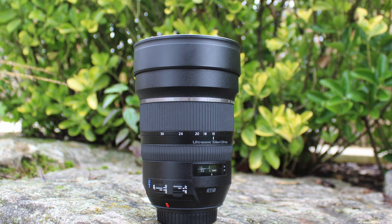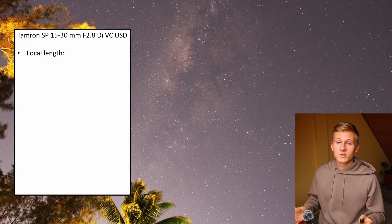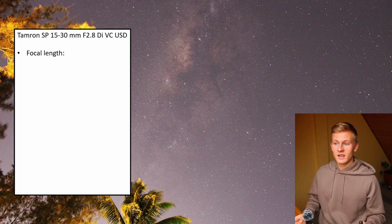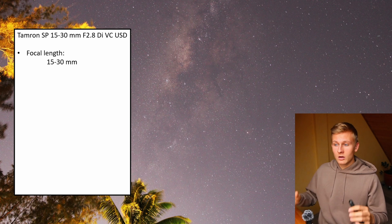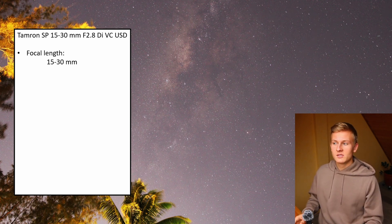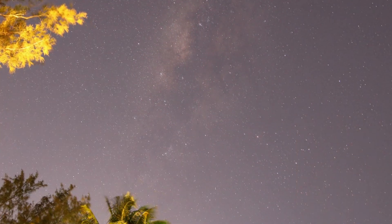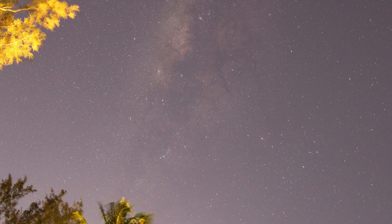We can use different focal lengths between 15 and 30mm, which is great because you can change the focal length. You can get a very wide field of view of the night sky when using 15mm and you can get a closer view when using 30mm. That's the perfect range to get great images of the night sky, depending on the location and the object you'd like to capture.